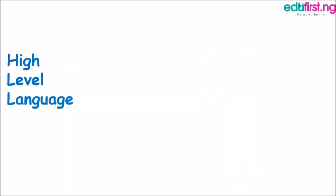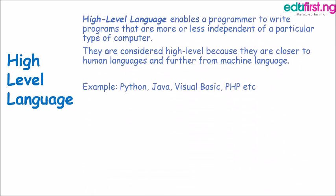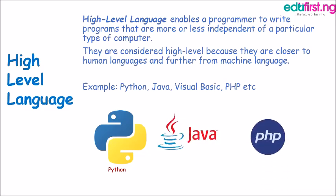A high-level programming language is a language that enables a programmer to write programs that are more or less independent of a particular type of computer. The program written with a high-level language doesn't depend heavily on the specific computer it runs on. It's considered high-level because it's closer to human language — humans can easily understand it more than other languages. Examples of high-level programming languages include Python, Java, and PHP, among many others.